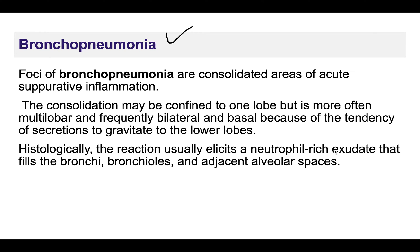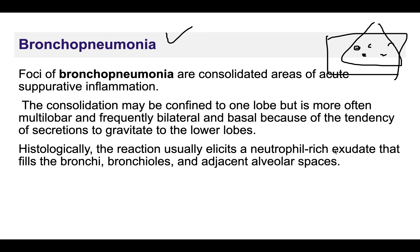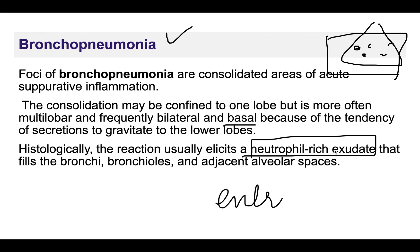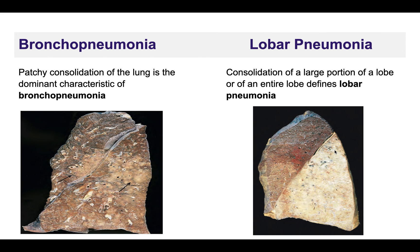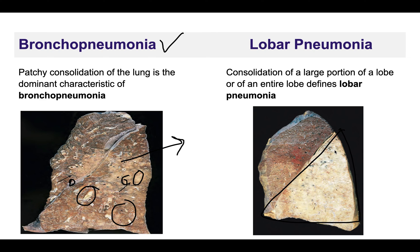In bronchopneumonia, there are multiple foci of involvement, mostly on the basal side of the lung, because secretions tend to gravitate toward the lower lobes. Histologically, there is mostly a neutrophil-rich exudate. Bronchopneumonia involves persons at extremes of age, whereas lobar pneumonia can affect persons of normal age groups as well. On X-ray, bronchopneumonia shows multiple radiopaque densities, while lobar pneumonia shows an entire radiopaque area.